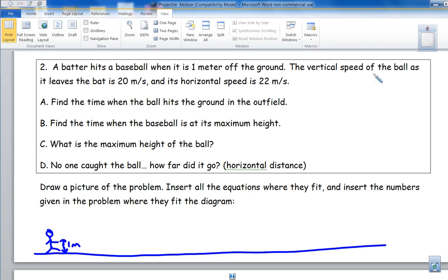The vertical speed of the ball as it leaves the bat is 20 meters per second, so something gets hit. The initial vertical speed, I'll put it in red here, vertical speed is 20 meters per second, that's just the vertical.